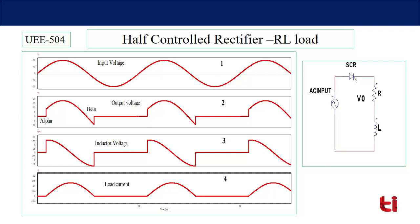At beta, the thyristor is reverse-biased and current is zero. So the conduction period is not from alpha to pi but from alpha to beta. Compared to resistive load, here the conduction period is more. As the conduction period is more and the output voltage is following the input voltage, a little bit of negative voltage is also obtained — from pi to beta the output voltage is negative, and from alpha to pi the output voltage is positive.